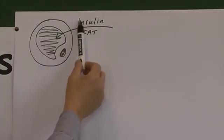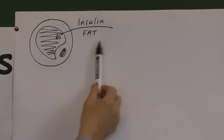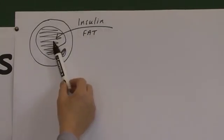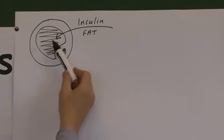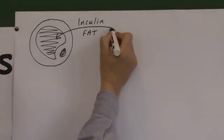So high levels of insulin means that the fat goes from the blood into the cell. Conversely, when the levels of insulin are low, and fat is needed by the body for metabolic processes, low levels of insulin allow fat to go from the fat cell, from the adipocyte, back into the blood.